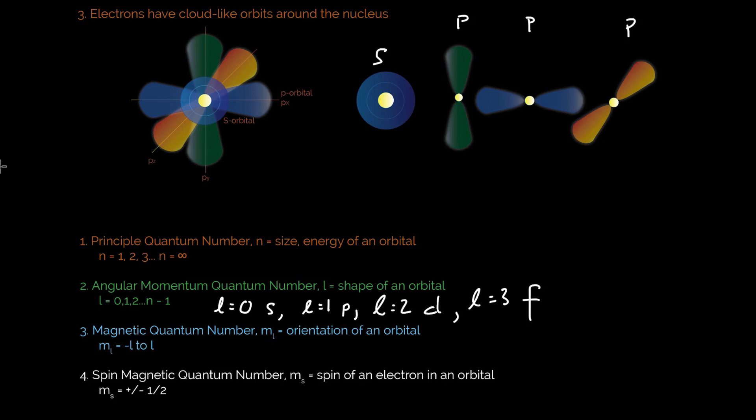So in the case of your p orbital, you have l equals 1, so your m sub l could be negative 1, 0, and 1. That's three different orientations. And as you can see here, that represents the three orientations of the p orbital. So really nice to see how all that comes together.